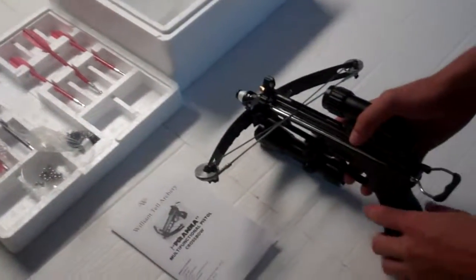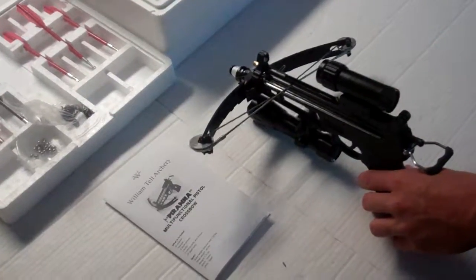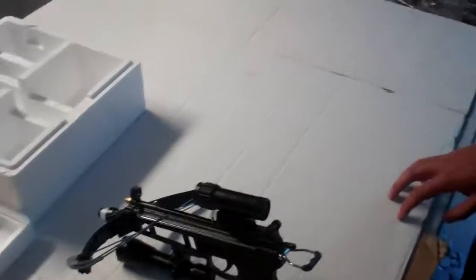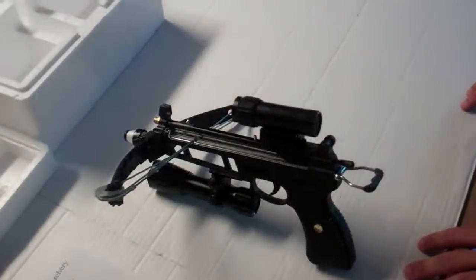It comes with three fishing reels as well, that are about eight feet long. And it also comes with a manual. And that's my Piranha 50lb Pistol Crossbow.